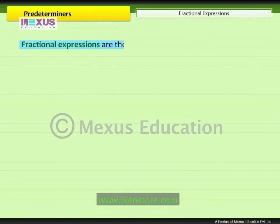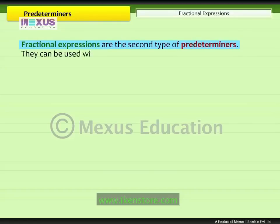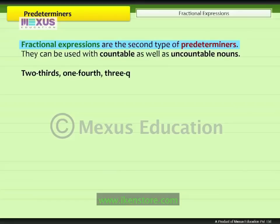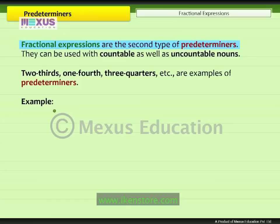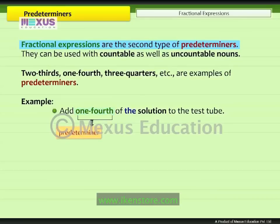Fractional expressions are the second type of predeterminers. They can be used with countable as well as uncountable nouns. Two-thirds, one-fourth, three-quarters, etc. are examples of predeterminers. For example, 'add one-fourth of the solution to the test tube.' The fractional expression 'one-fourth' is the predeterminer. It comes before the determiner 'the' and is used with the uncountable noun 'solution.'